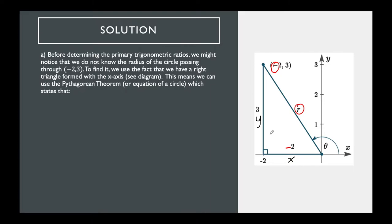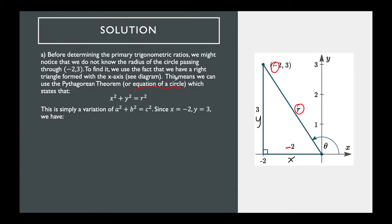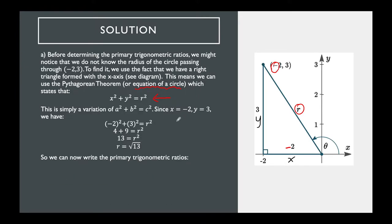To find the radius, we use the Pythagorean theorem or the equation of a circle: x² + y² = r². We sub in the x and y coordinates and solve for r. Substituting in, we get r² = 13, which means r = √13. So our radius is √13. We now have x = −2, y = 3, and r = √13.